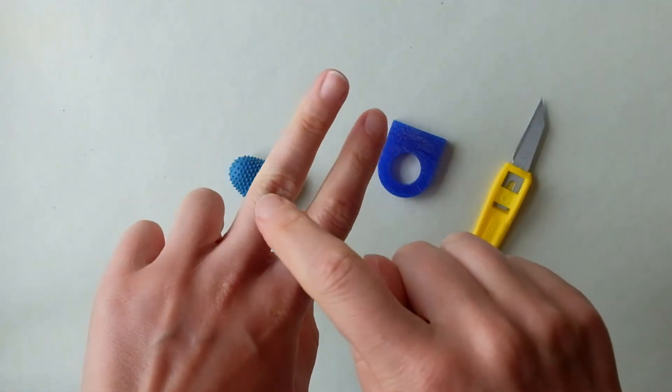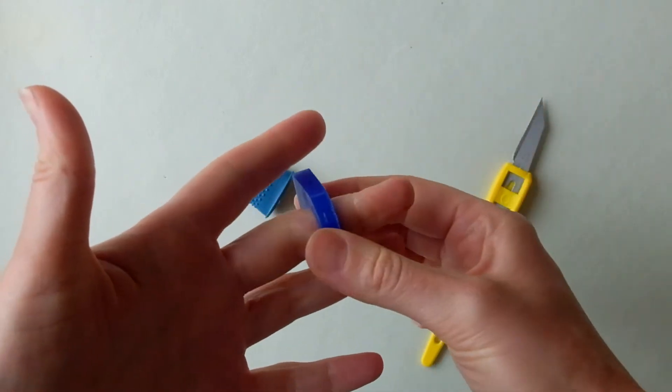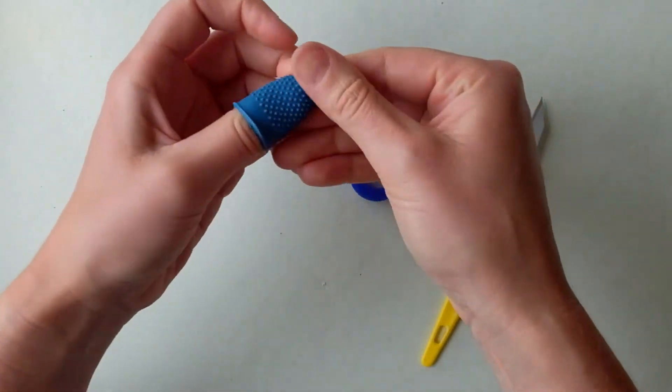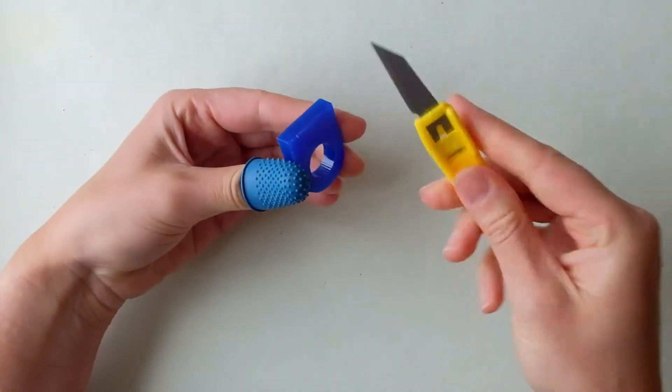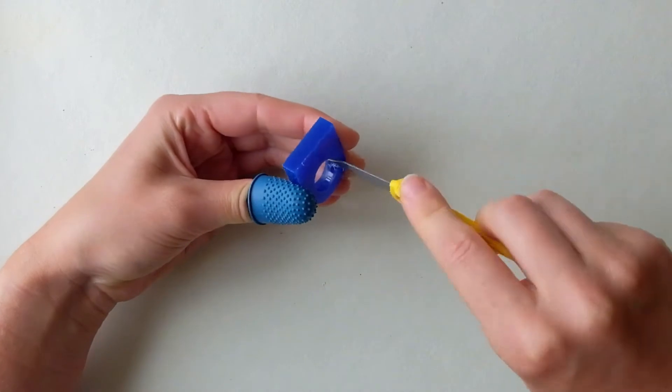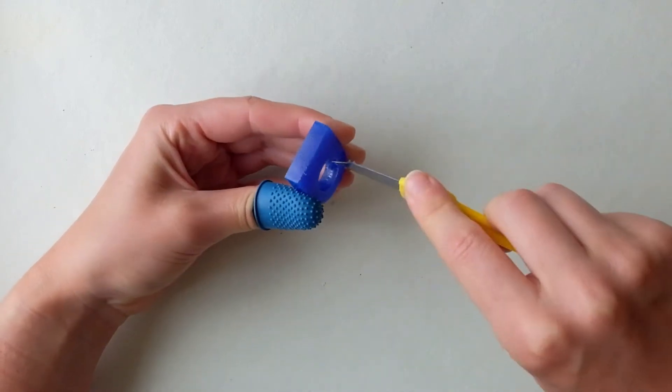So the first thing that we're going to do is choose the finger that we want to make our ring for. As you can see when you try the wax on, it's a little bit small. So what we're going to do is place our thimble on the thumb that's going to hold the wax, and we're going to start carving from the inside of the wax to take away enough that our wax will fit our finger.